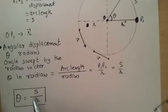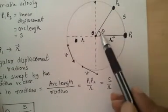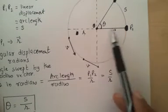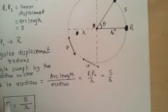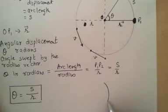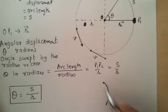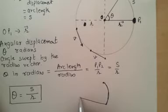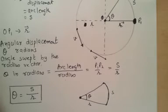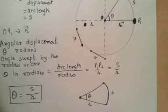This definition makes sense because as s increases, theta would increase — theta and s are directly proportional. Similarly, if r increases, then theta would decrease for the same displacement. That's why we arrive at this definition of theta. Once s and r are fixed, theta gets fixed. Suppose this is arc length s, and I fix up radius r — once these two values are known, I can join them and get theta. Therefore theta is given by s upon r, inversely proportional to r and directly proportional to s.